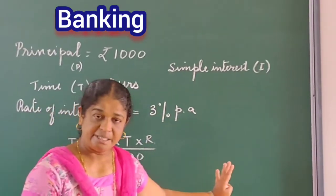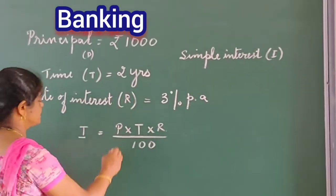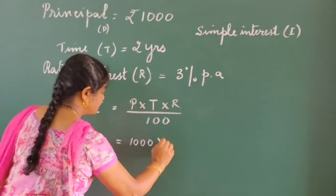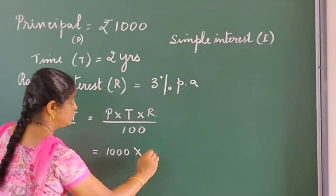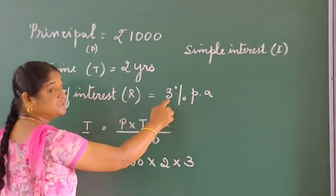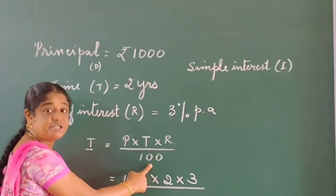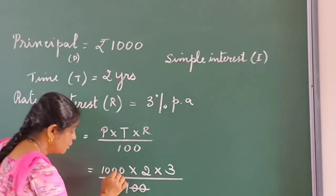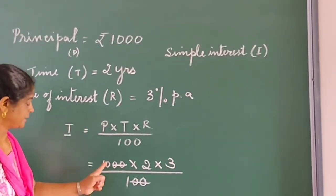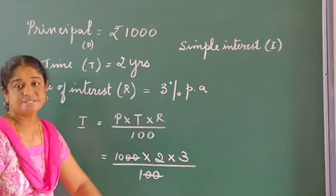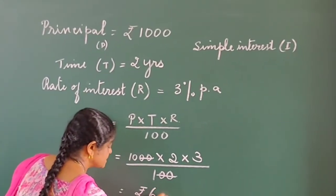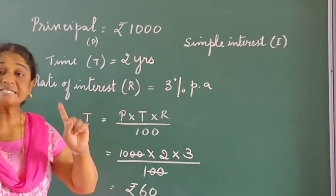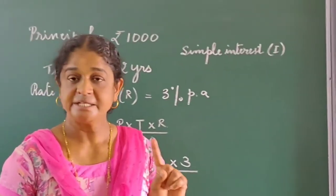Now here we calculate the simple interest. According to this example, the principal is rupees 1000, time is two years, and the rate of interest is 3% per annum. So we have 1000 into 2 into 3 divided by 100. We cancel two zeros in the denominator with two zeros in the numerator, giving us 10 into 2 into 3. That is 10 into 2 is 20, and 20 into 3 is 60. So the simple interest is rupees 60.